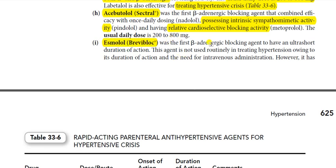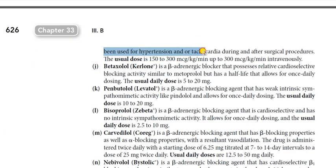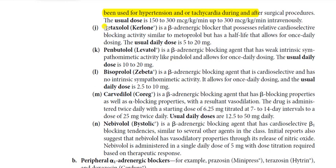Esmolol was the first beta blocker to have ultra-short duration of action. This agent is not used routinely in treating hypertension owing to its short duration, but it can be administered intravenously. However, it has been used for hypertension or tachycardia during or after surgical procedures. The usual dose is 150 to 300 micrograms per kg per minute IV.